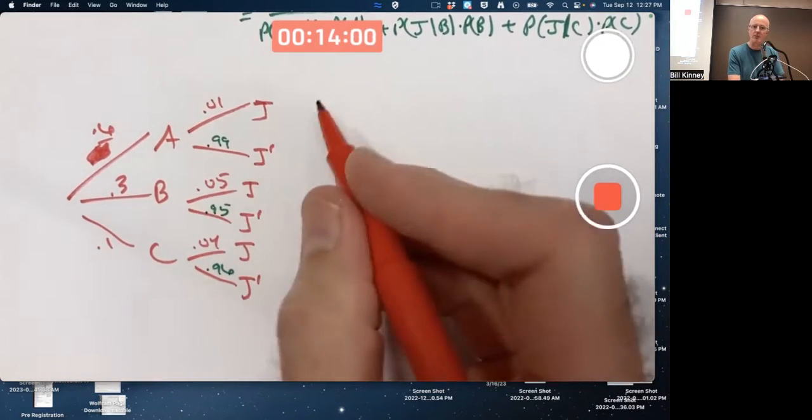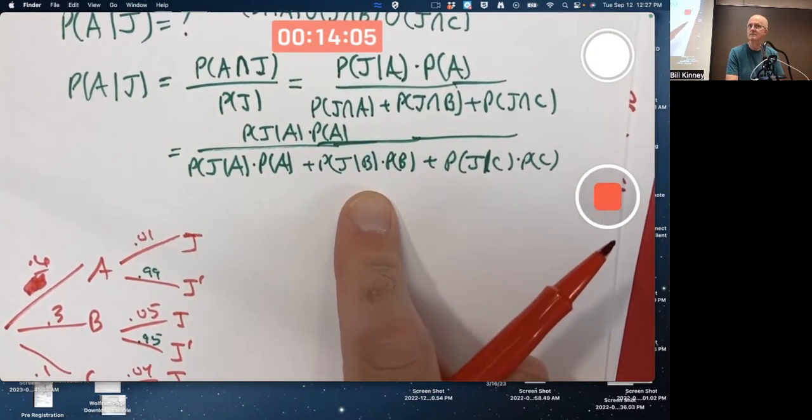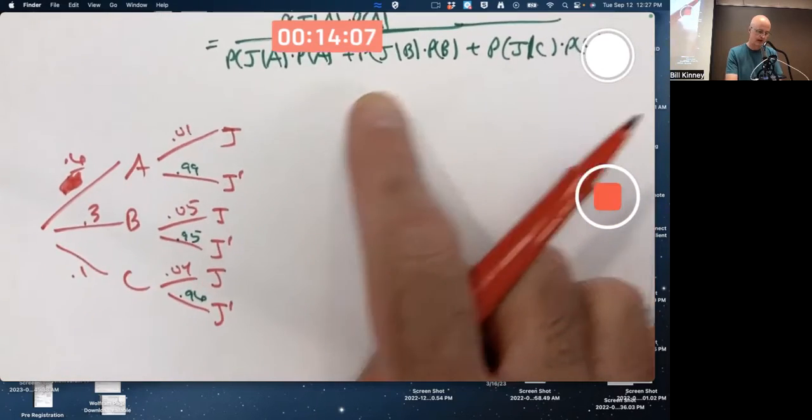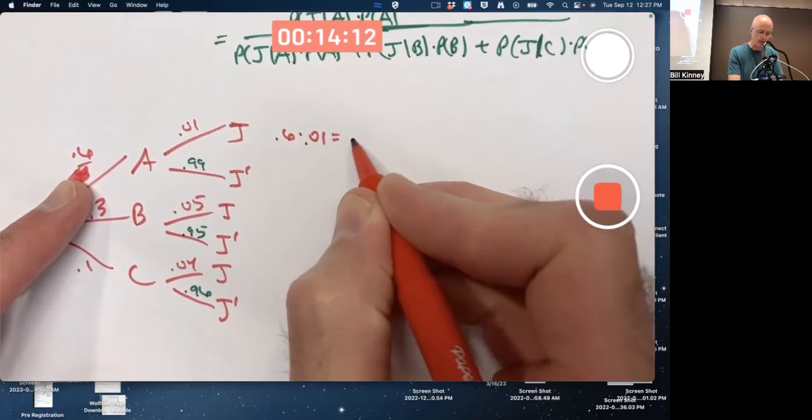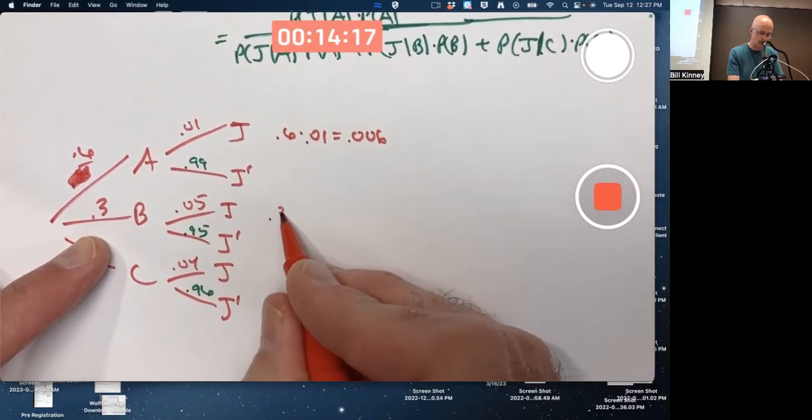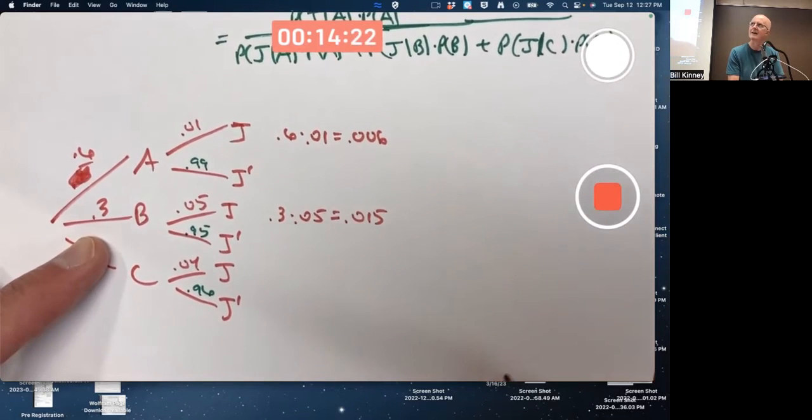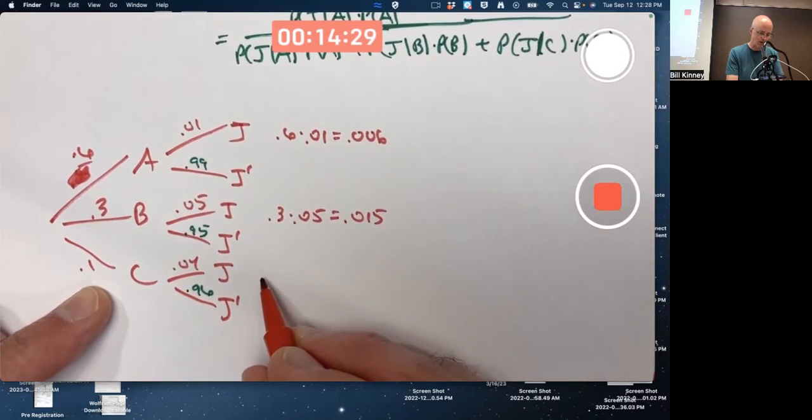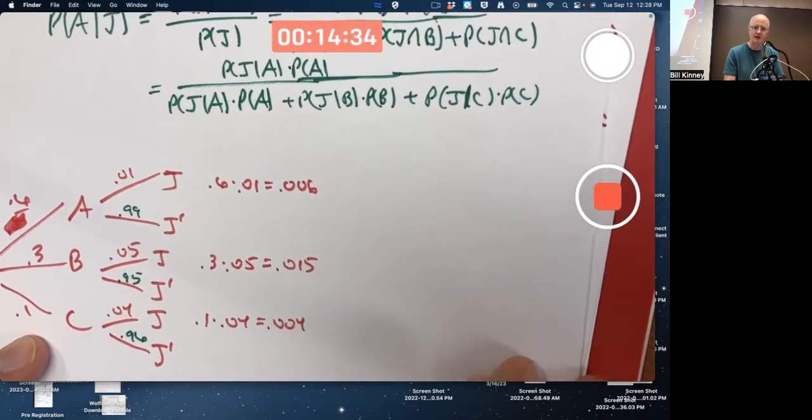Then multiply along the branches. That's going to give you these products that you see in this fraction. So we got point six times point zero one. That'll be point zero zero six. We've got point three times point zero five. What will that be? Point zero one five, I think, with my head. Sounds right. Double check it in your head. And then finally, point one times point zero four is point zero zero four. Those are the numbers that go in this fraction.